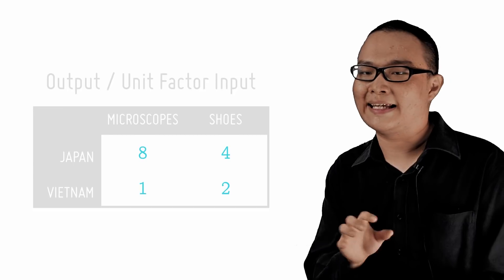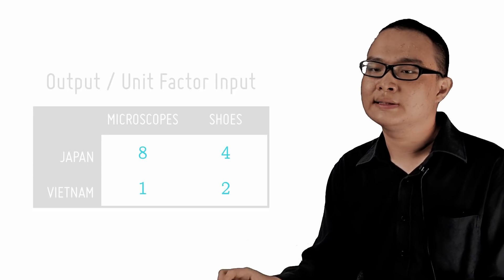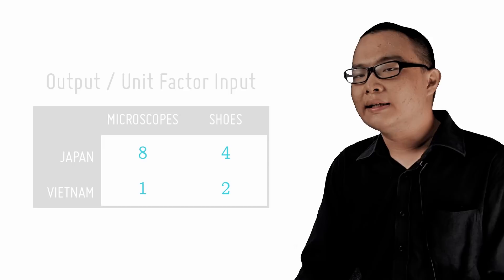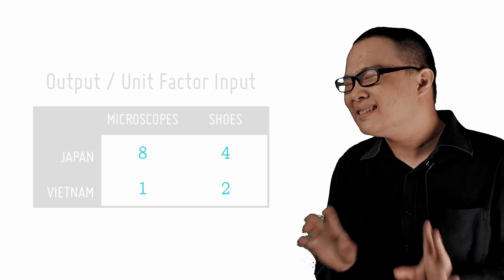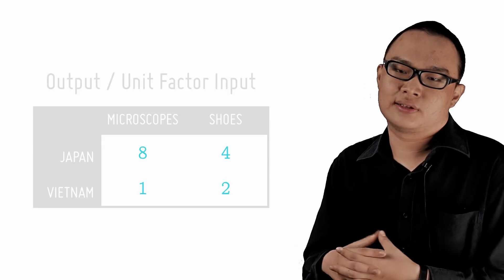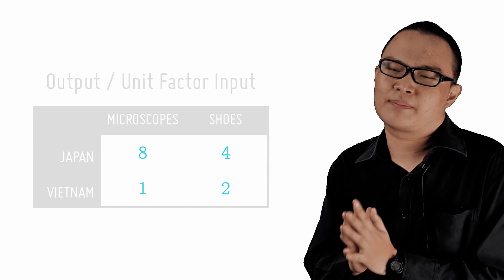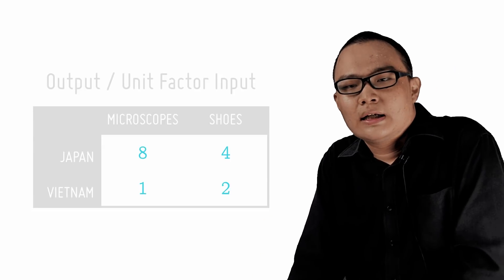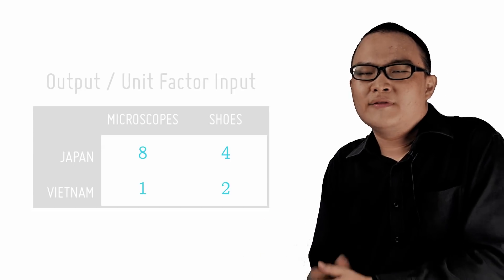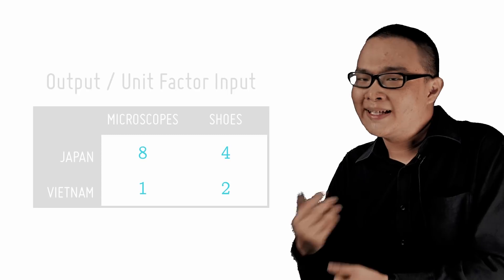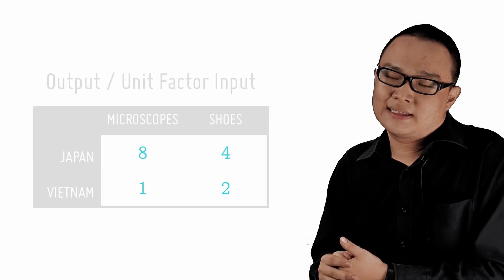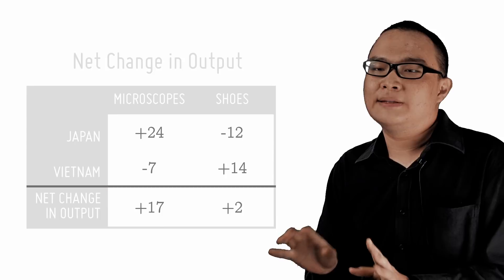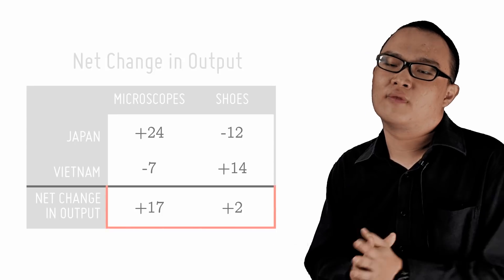Because Japan enjoys an absolute advantage in both goods, it must transfer fewer factor units for our model to work. I am aware that this is technically cooking the books to get the results I want, but this is a necessity under ceteris paribus. Thus, with this diagram, we can show that making the adjustments, comparative advantage-based specialization is mutually beneficial to both countries.